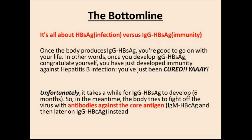The bottom line: it's all about the hepatitis B surface antigen, which represents infection, versus IgG against the hepatitis B surface antigen, which represents immunity. Once the body produces IgG against the surface antigen, you have developed immunity against hepatitis B infection — you've been cured. Unfortunately, it takes a while for IgGs to develop against the surface antigen, about 6 months or so. Therefore, in the meantime, the body tries to fight off the virus with antibodies directed against the core antigen. Initially the body produces IgMs against the core antigen, and then IgGs against the core antigen if it takes that long.